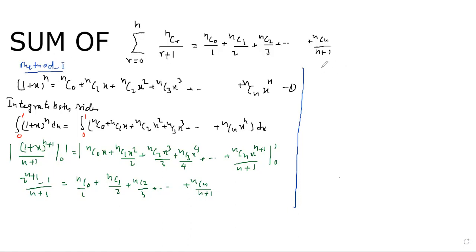Now we discuss method 2. What is the method 2? Here is the method 2. This is the series. We can use nCr upon n plus 1, and r is starting from 0 to n. Now what do we discuss? This is the method 2.